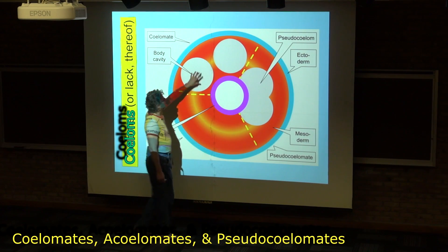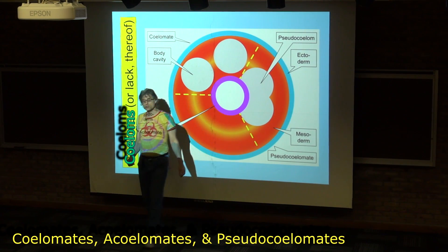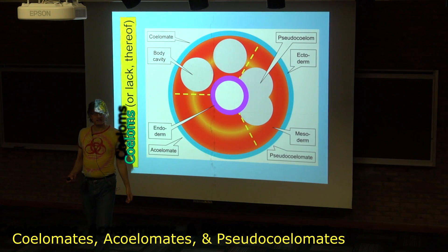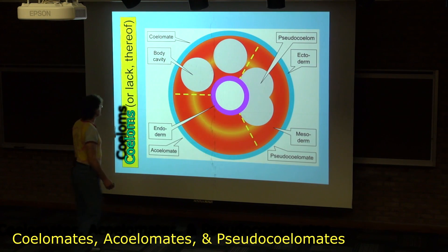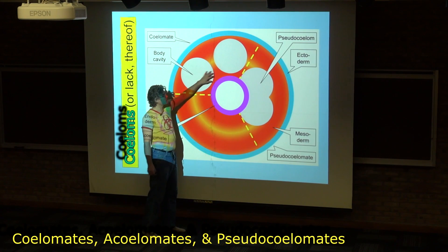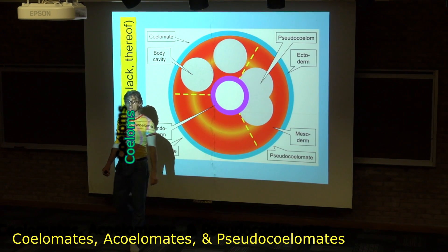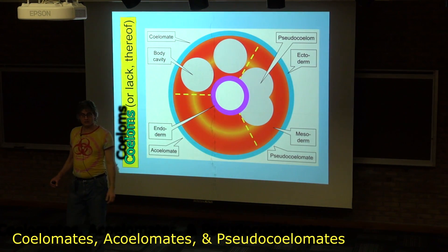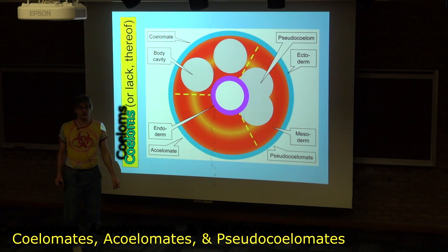Then we have in greater complexity the true coelomates, or the coelomates. These organisms have these body cavities completely contained within mesodermal tissue. This is what you see with most of the animals, including ourselves.